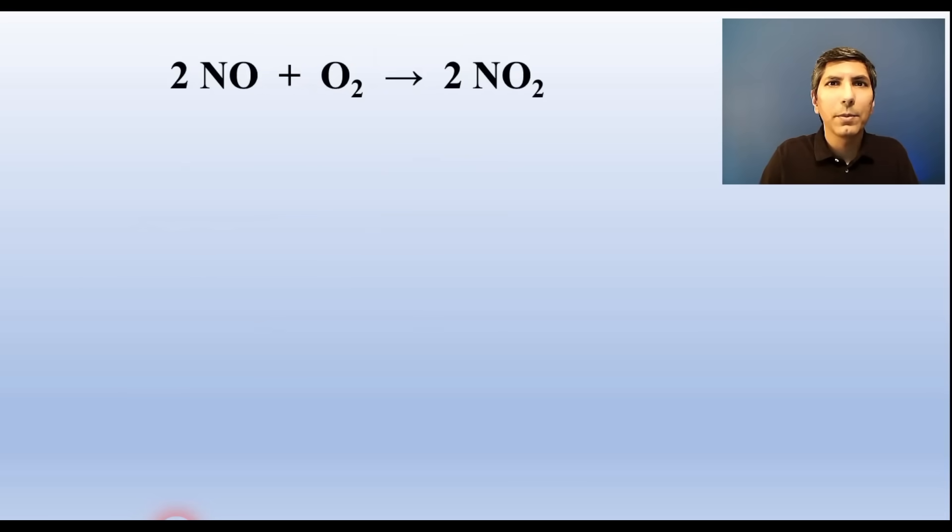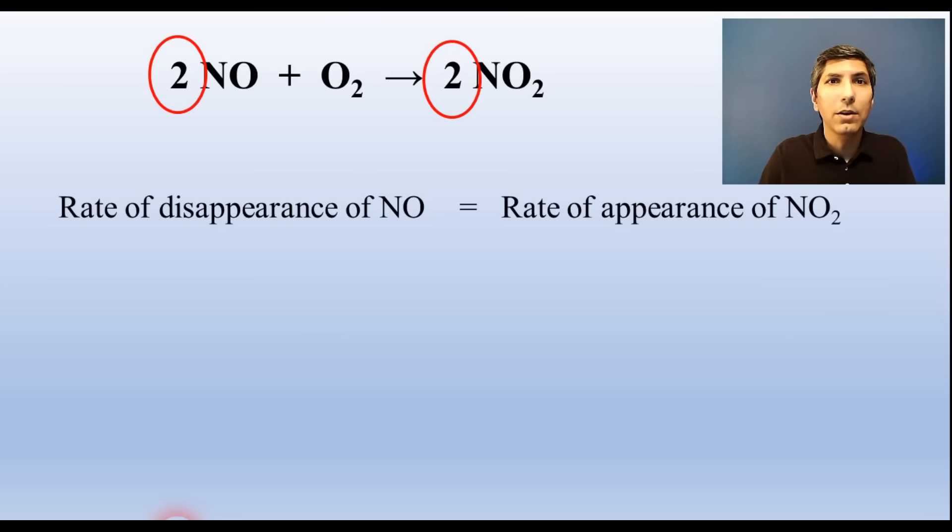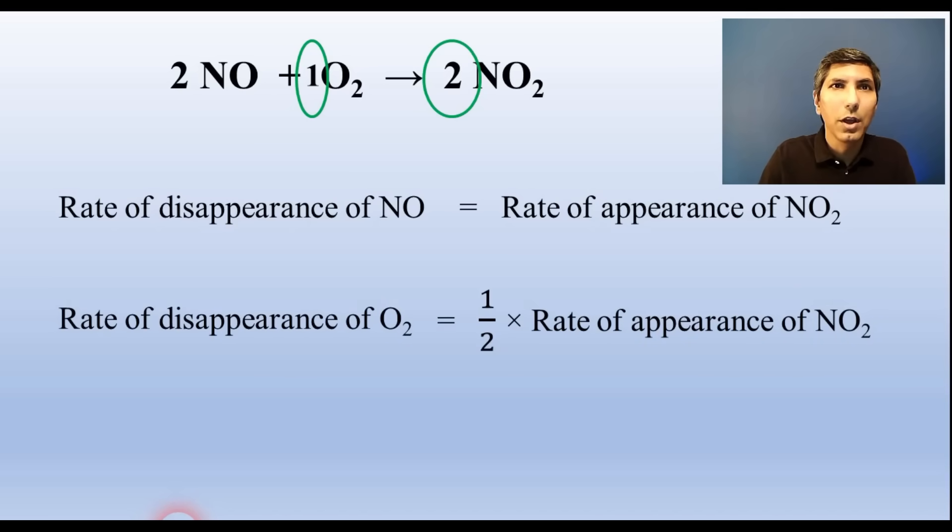In a chemical reaction, we can determine the relative rates of the reactants and products by looking at the coefficients of the balanced equation. For example, in this reaction, since the coefficients of NO and NO2 are equal, we can say that the rate of disappearance of NO will be equal to the rate of appearance of NO2. On the other hand, since NO has a coefficient twice as large as that of O2, we can say that the rate of disappearance of O2 will only be half that of NO.